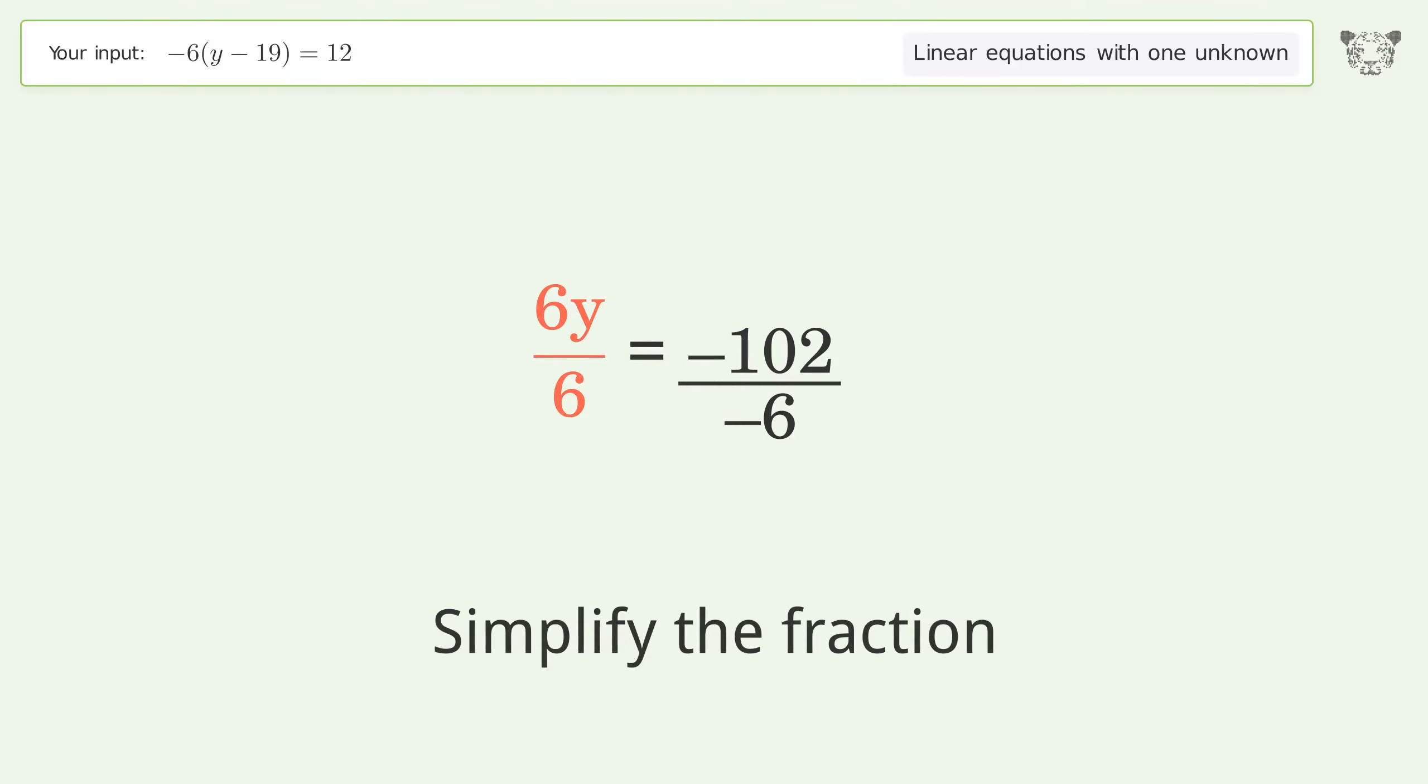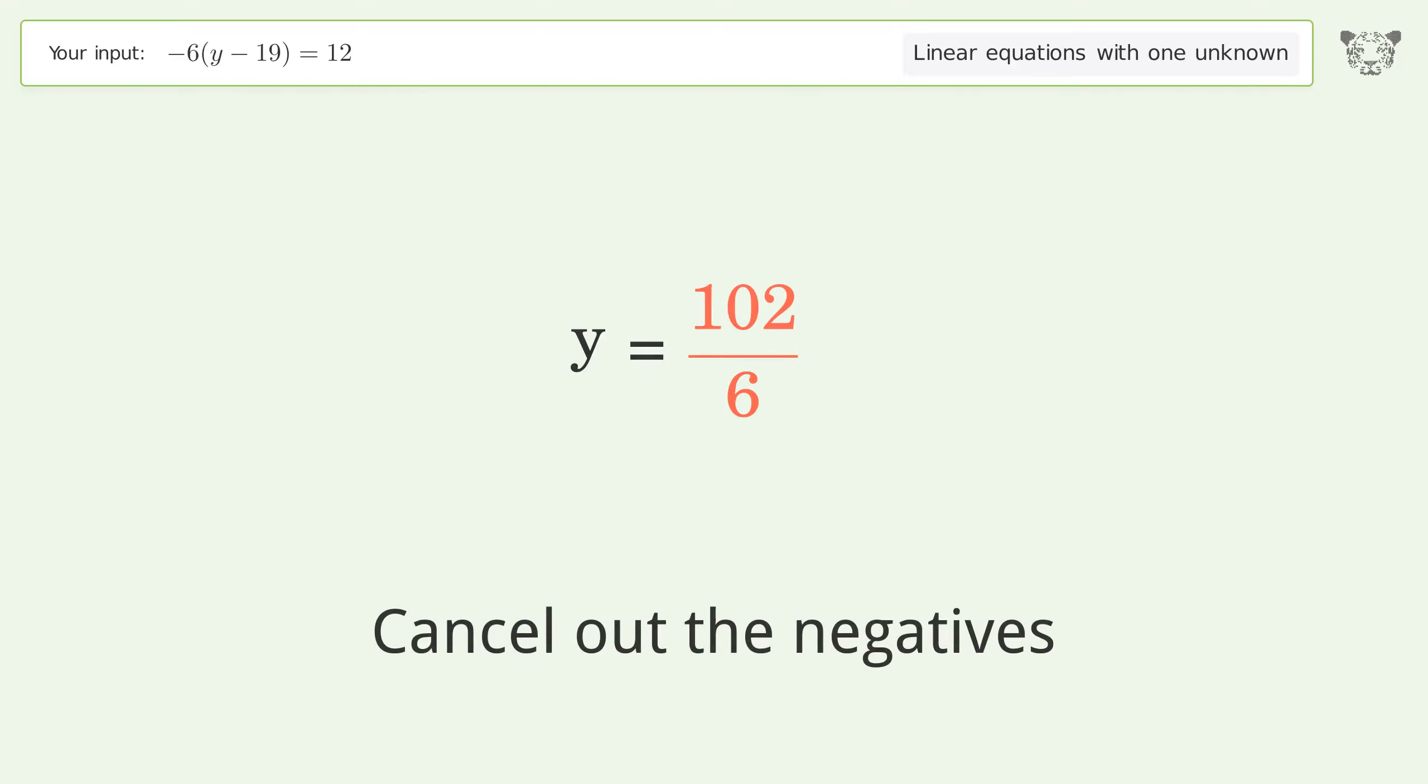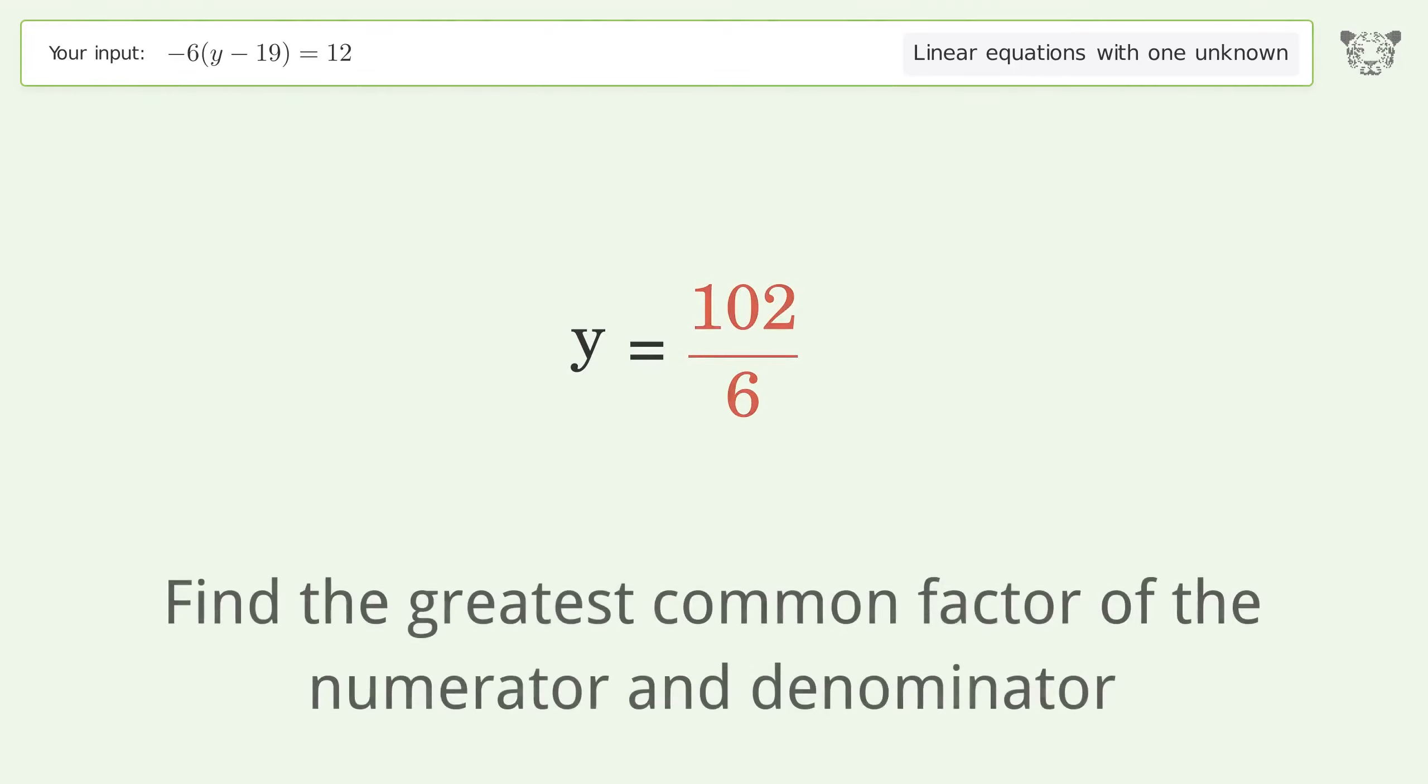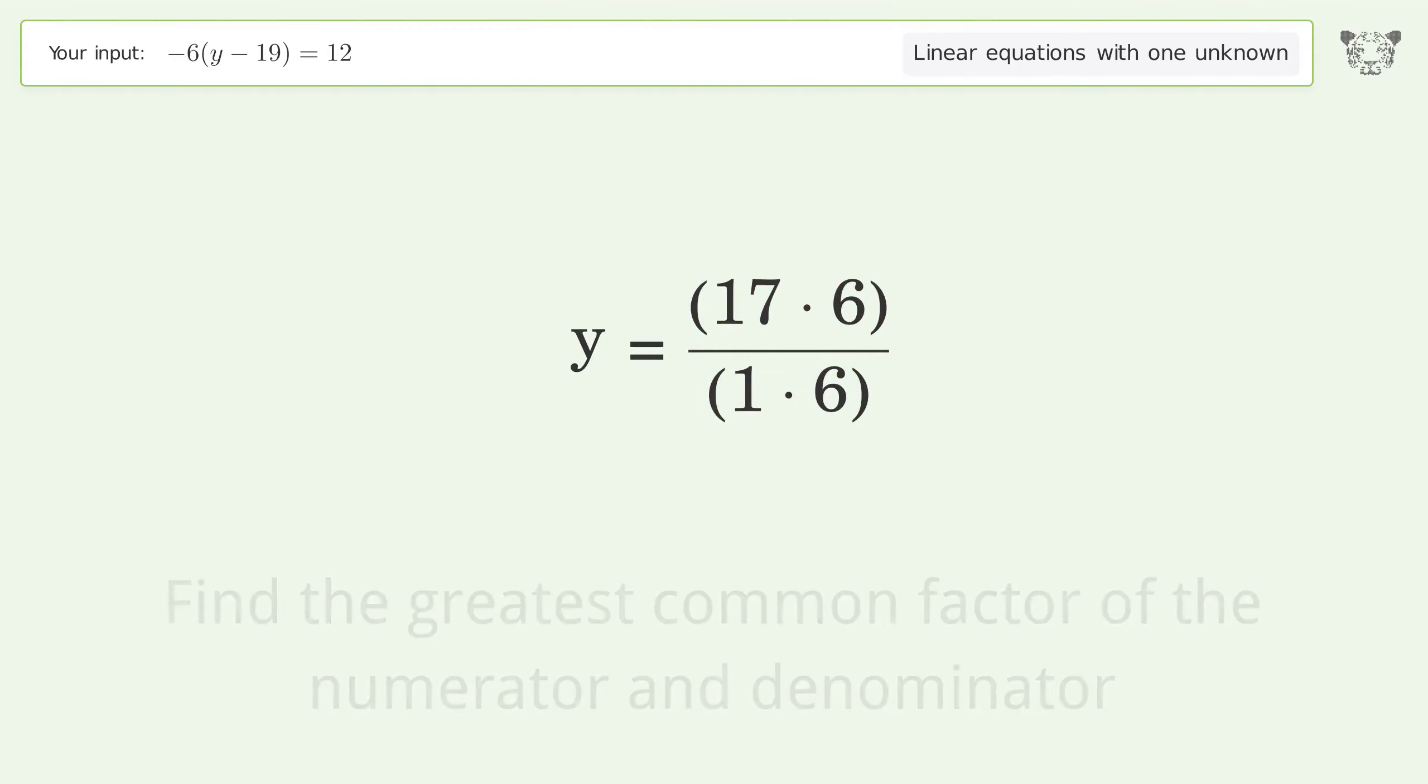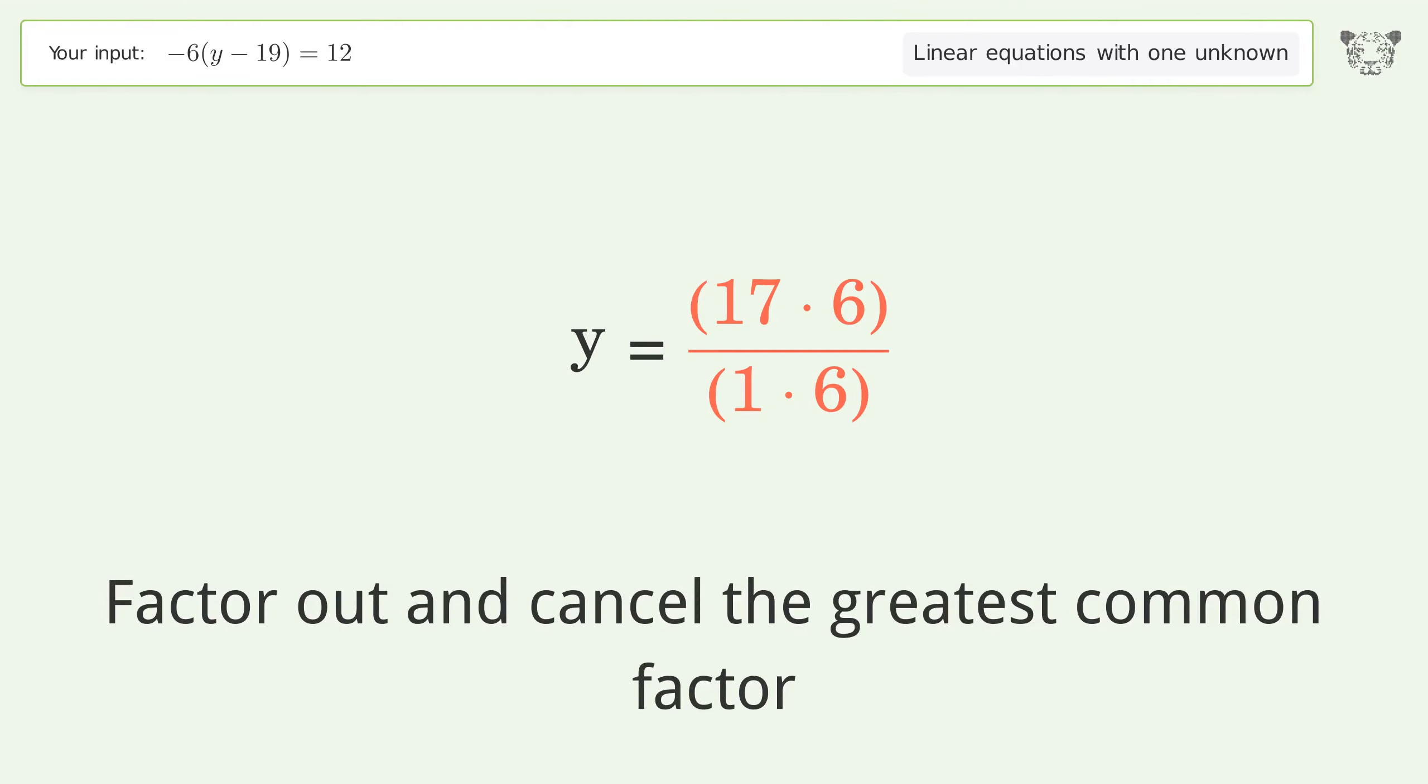Simplify the fraction. Find the greatest common factor of the numerator and denominator. Factor out and cancel the greatest common factor.